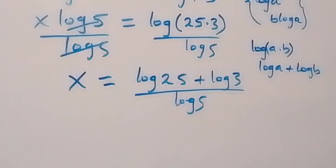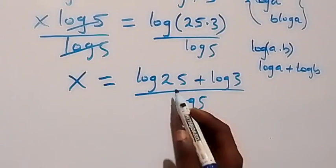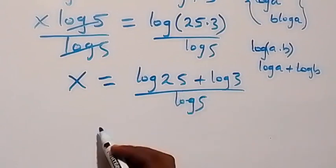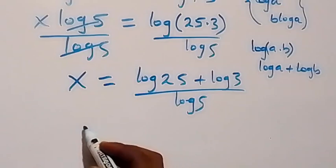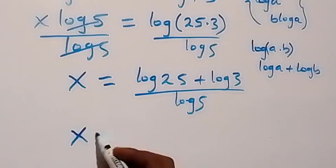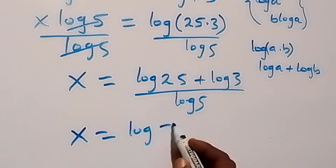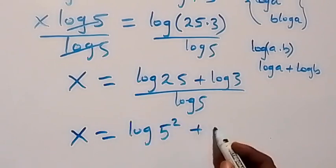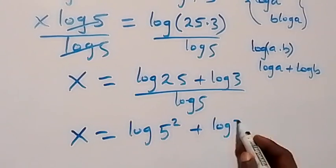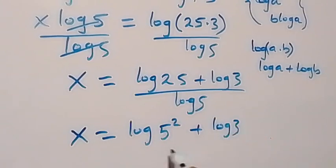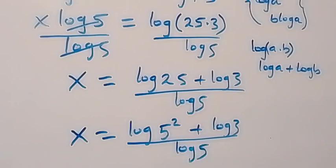Then from here we can write 25 and separate this as 5 times 5, which is 5 squared. So x now equals to log 5 squared plus log 3, divided by log 5.